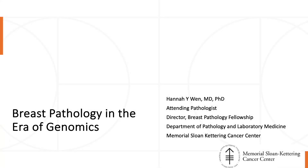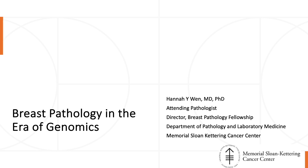In this presentation, I will talk about breast pathology in the area of genomics. Molecular testing has been increasingly used in breast cancer diagnosis and treatment. I'll use some case examples to illustrate how we use molecular testing to help with tumor classification, diagnosis, and treatment. As a surgical pathologist, we don't have to personally do molecular testing, but it's important to know how to use it as a tool to help us interpret difficult cases.